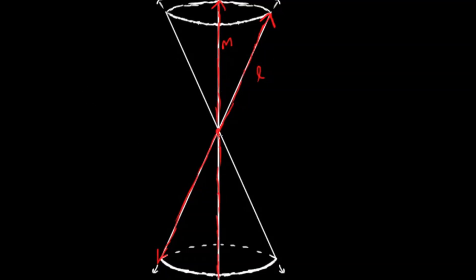The most important thing in this construction is not only the two lines, but the angle between them. We'll call the angle between them alpha. So we have two lines, L and M, and an angle between them alpha. This angle could change, thus creating different sized cones.